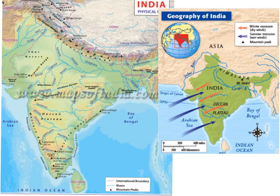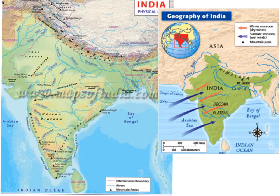Next, follow the wind. Trace the wind arrows on the map with your finger. Which winds — winter or summer — do you think bring rain to India? Why? Which winds bring dry, cool air, and why do you think those winds do that? Pause the video for a few seconds and come up with your answers.